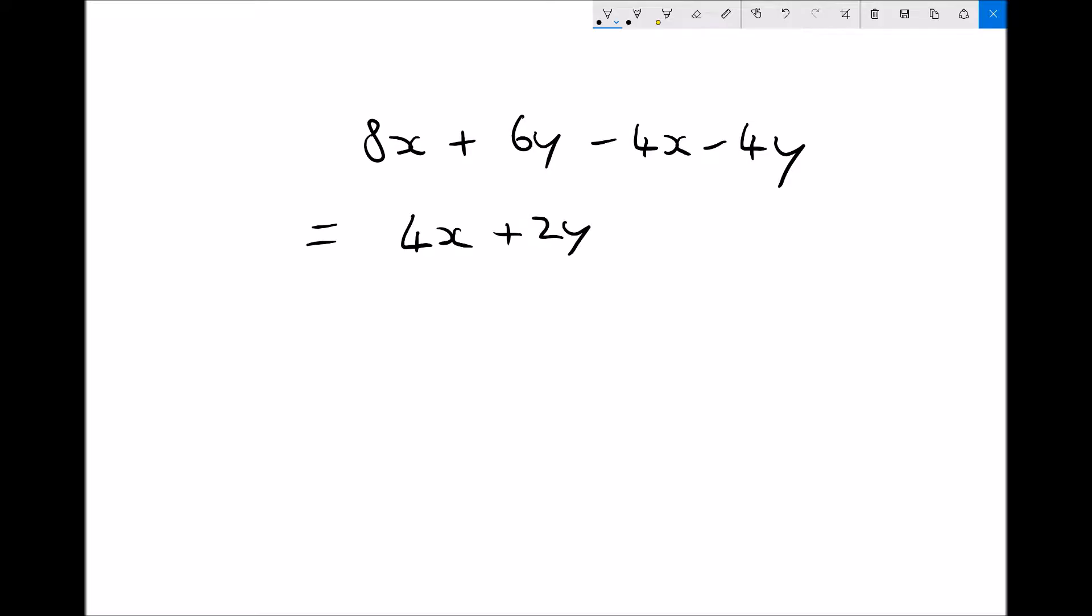Now if we look at this, the common factor, the thing that 4 divides by and 2 divides by, is the number 2. So we can factorise this. We can take the 2 outside the brackets. 4x divided by 2, well 4 divided by 2 is 2, so inside the brackets we'll get 2x. And then we've got plus 2y. 2y divided by 2 is just y. So now we've factorised that expression. So our first step was to collect like terms. Once we'd collected like terms, we factorised the expression.